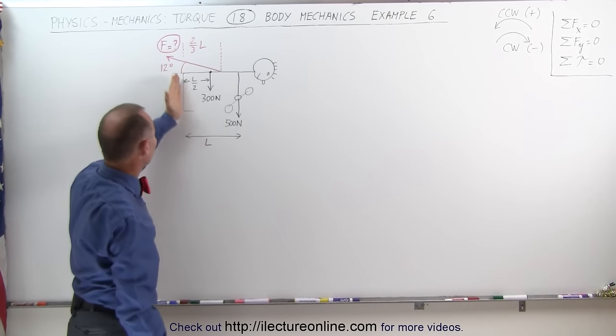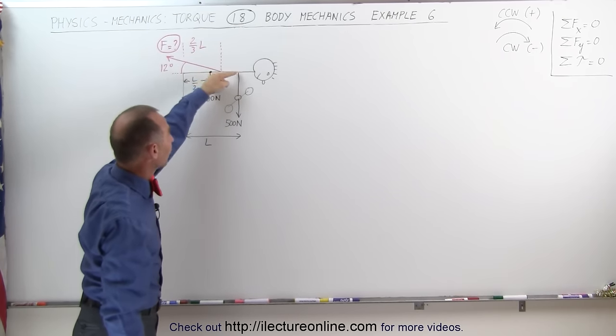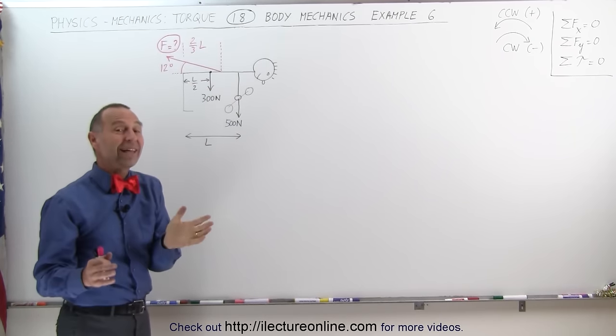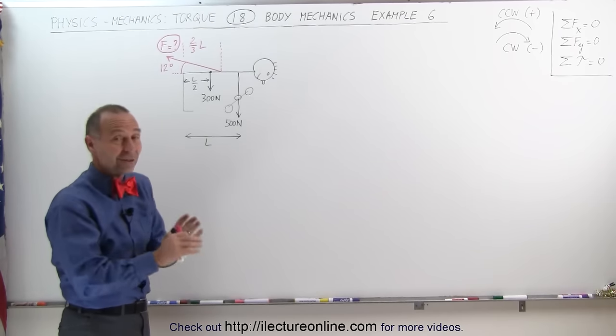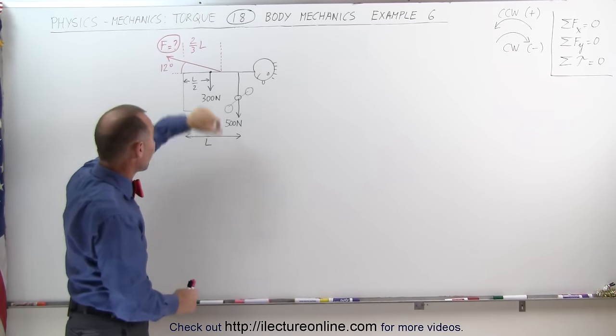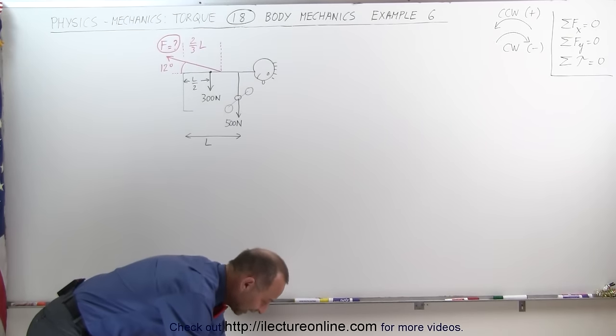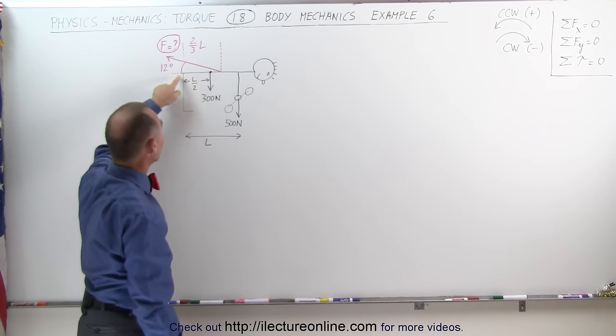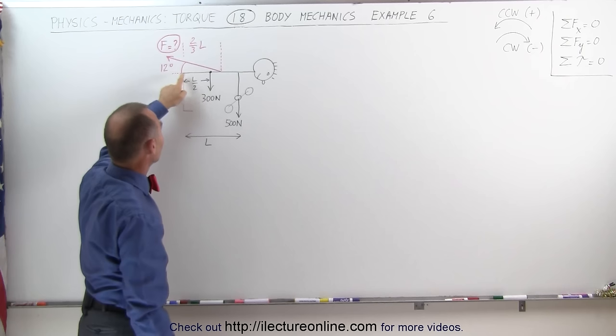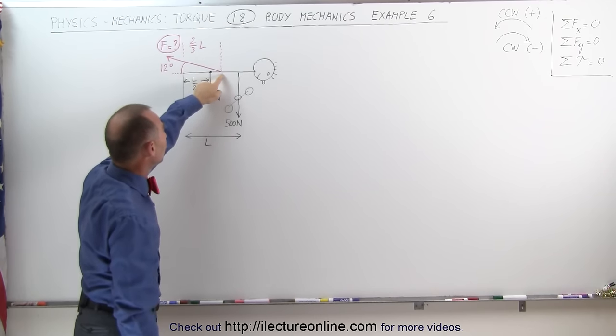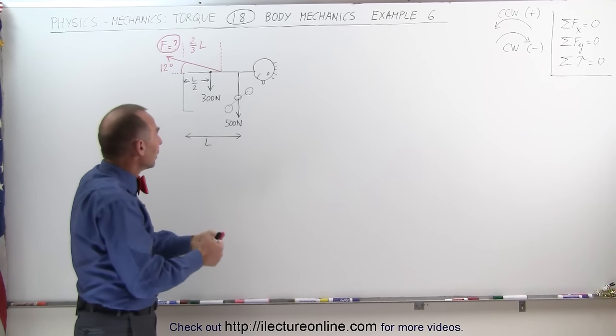So here you have a person, these are the person's legs, that's the person's back, that's the person's arms. As you can tell I'm not very artistic. Here's the person's head, so the person's holding a weight like this and now it's this back muscle right here which attaches about two-thirds the distance from the pivot point to the back, and that is what's holding the body up.